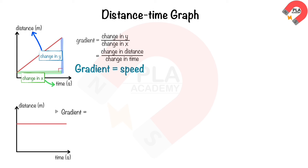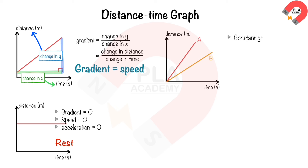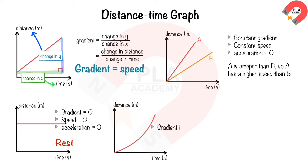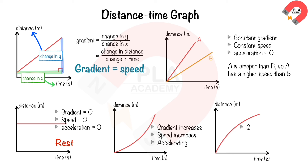A horizontal line graph with zero gradient indicates speed is zero and no acceleration — the object is at rest. A straight line graph with constant gradient indicates the object is moving at constant speed with no acceleration. Line A is steeper than B, so A has a higher speed than B. A curved graph with an increasing gradient indicates the object is moving at increasing speed and is accelerating. A curved graph with a decreasing gradient indicates decreasing speed and deceleration.